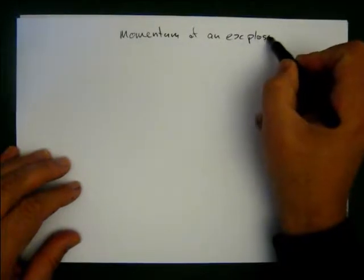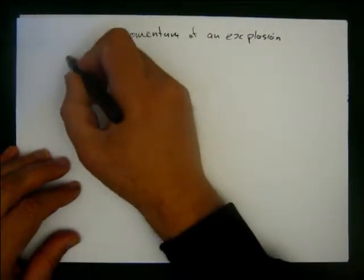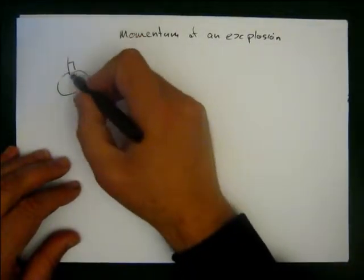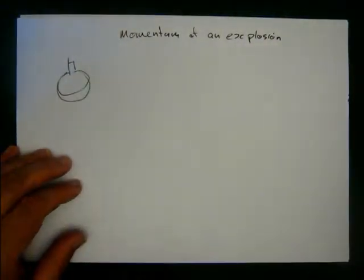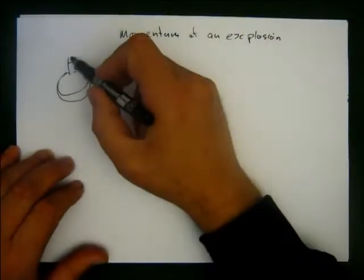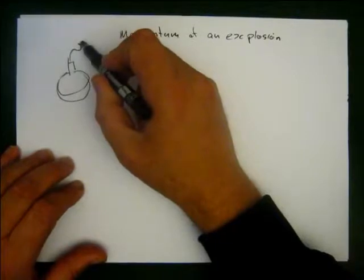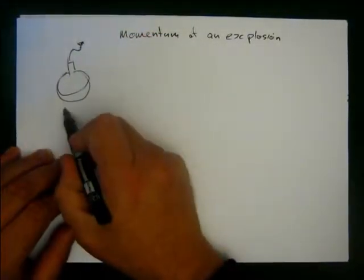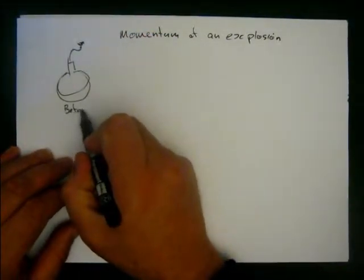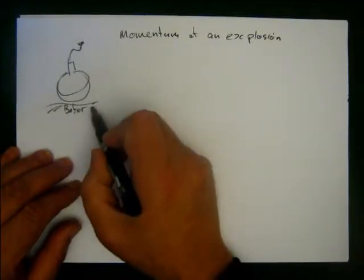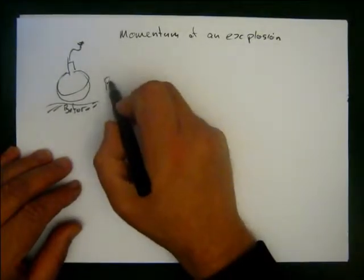Let's imagine the classic case we have here, the classic anarchist's bomb. I used to throw these around London back in the 1890s or whatever. Okay, so this is our before. And if it's sitting on the ground, the momentum is going to equal zero.